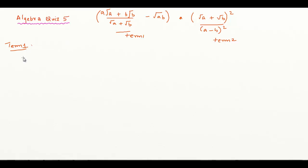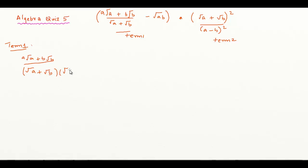To do that, I would have to multiply and divide by the conjugate of the irrational entity. So we've got: square root of a plus b times square root of b, divided by square root of a plus square root of b. Rationalization means multiplying and dividing by the conjugate: square root of a minus square root of b. And we've got the minus square root of ab term.